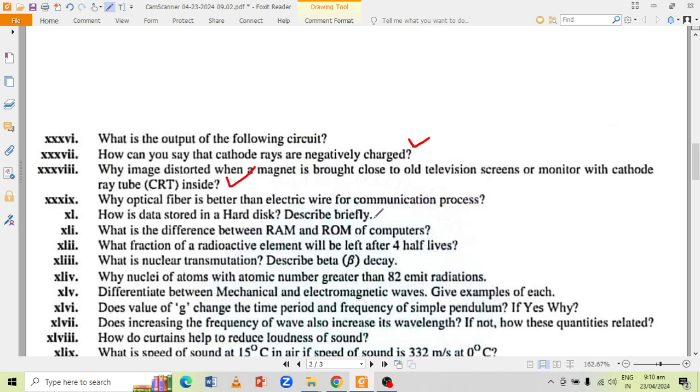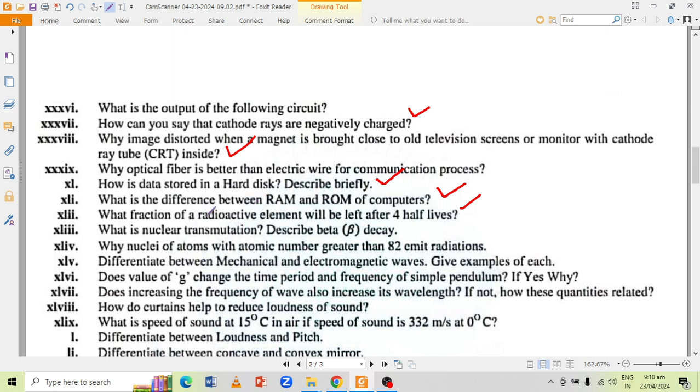How is data stored in a hard disk? What is difference between RAM and ROM of computers? What fraction of radioactive elements will be left after 4 half-lives? What is nuclear transmutation? Describe beta decay. Why nuclei of atoms with atomic number greater than 82 emit radiations?